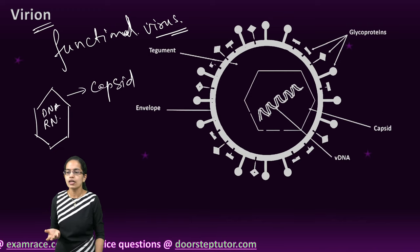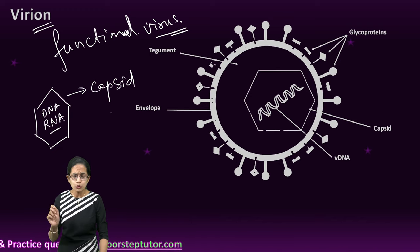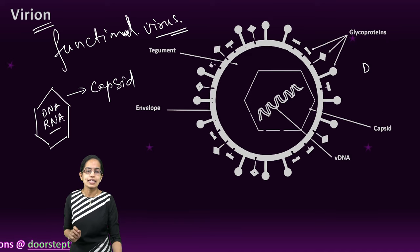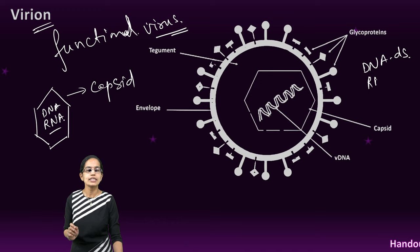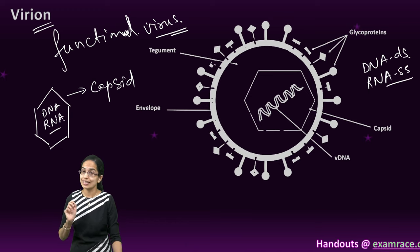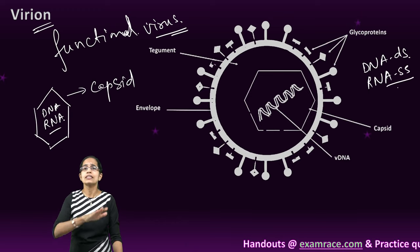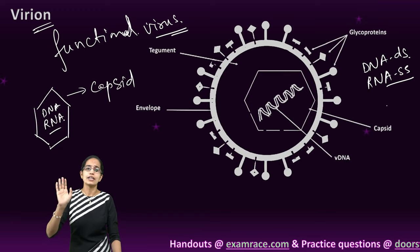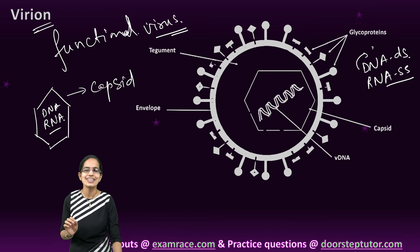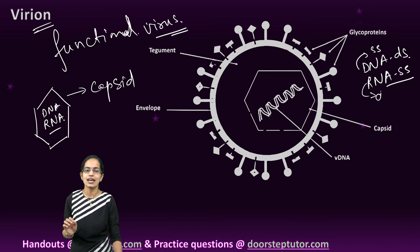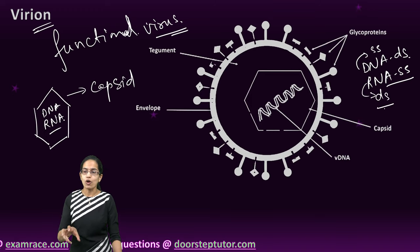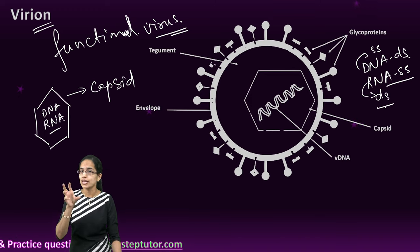This genetic material could be either DNA or RNA. Usually when we say DNA, it is double-stranded DNA that we talk about, and when it comes to RNA, we say it's single-stranded. But viruses take away all kind of exceptions, and even DNA can be single-stranded, RNA can be double-stranded, and therefore viruses have been very uniquely placed.